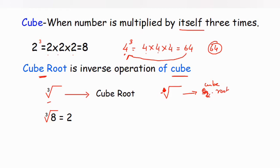So the cube root of eight is two, because two multiplied three times gives eight. Similarly, the cube root of sixty-four is four, because four multiplied three times gives sixty-four. But what if the numbers are bigger — like 1728, a four-digit number? For that, we're going to use the prime factorization method.